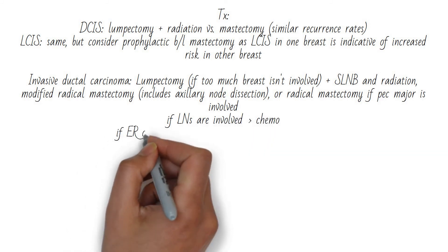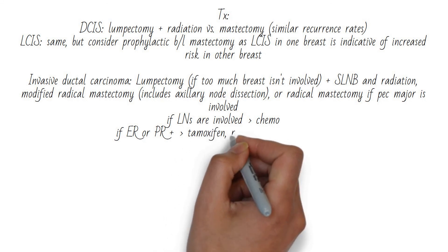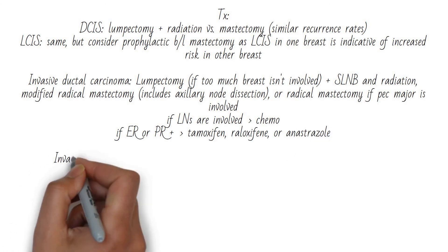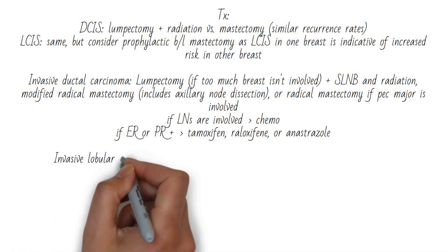If the lymph nodes come back positive, the patient needs chemo. Estrogen receptor or progesterone receptor positive cancers get treated with tamoxifen, raloxifene, or anastrozole.